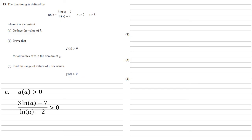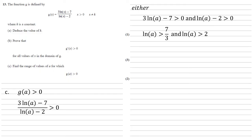For a fraction to be larger than 0, one way is for both the numerator and denominator to be larger than 0. So 3 ln a − 7 > 0 and ln a − 2 > 0 gives ln a > 7/3 and ln a > 2, meaning a > e^(7/3) and a > e². To satisfy both, we need a > e^(7/3), since that is the larger of the two.